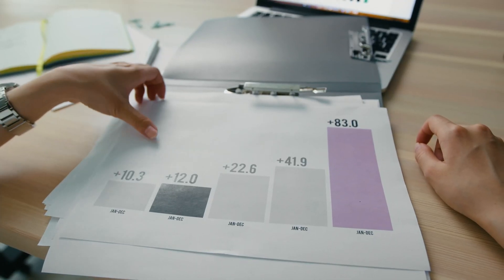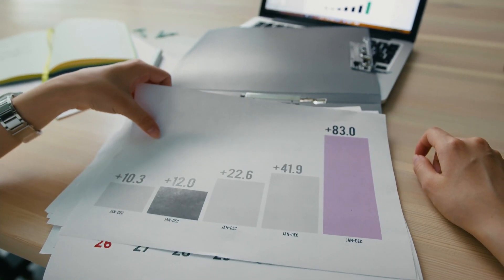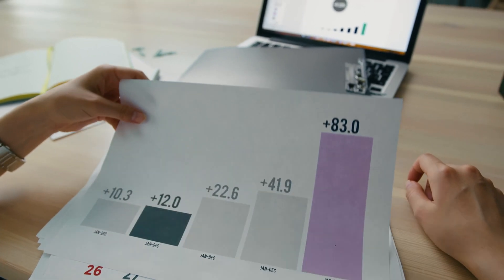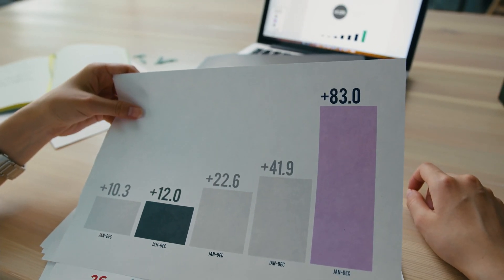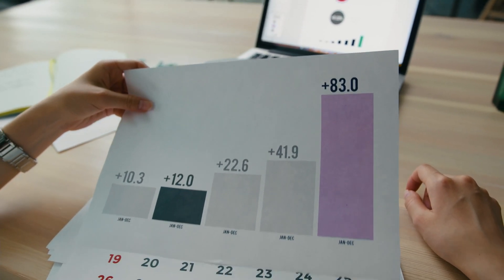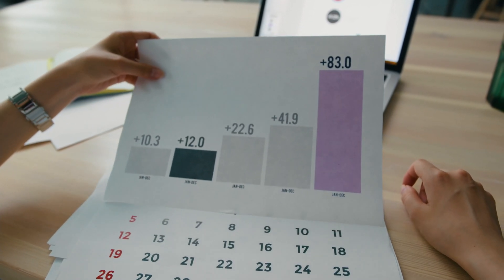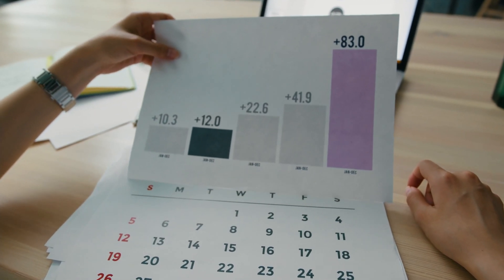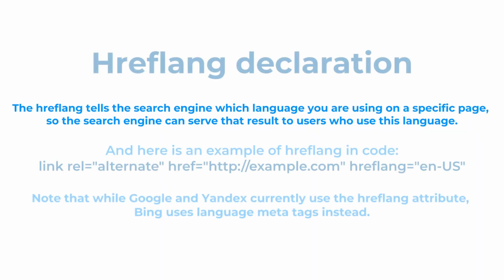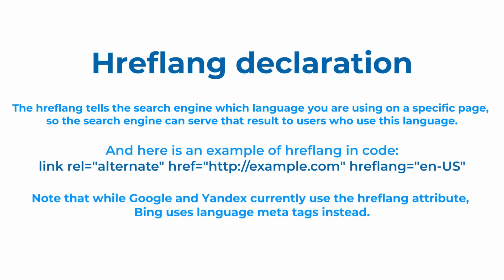This will influence your bounce rate by making sure that the right audience lands on the right version of your page. Keep in mind that while Google and Yandex currently use the hreflang attribute, search engine Bing uses language metatags.